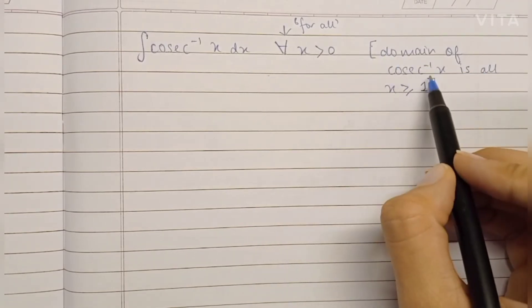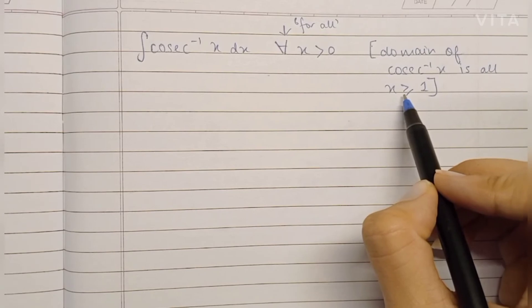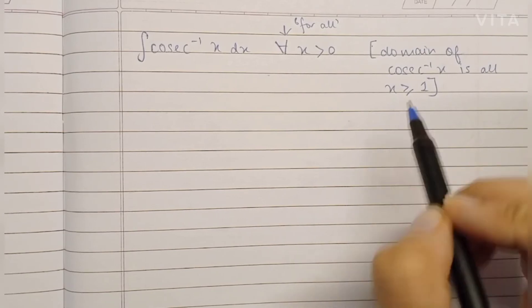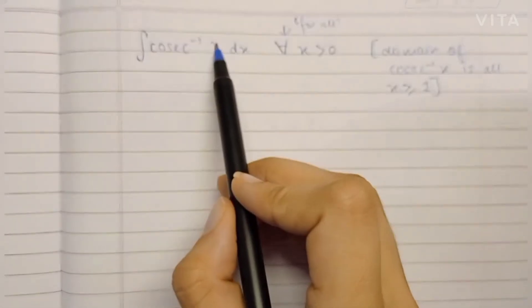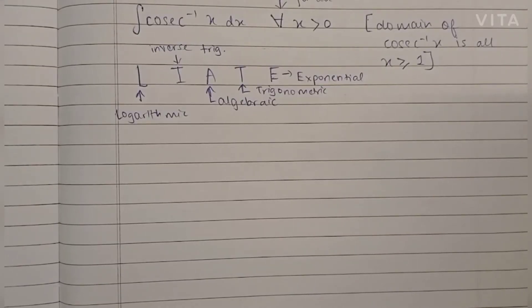Because the domain of the function cosec⁻¹(x) is all numbers x which are greater than or equal to 1, we cannot have 0 or less numbers.